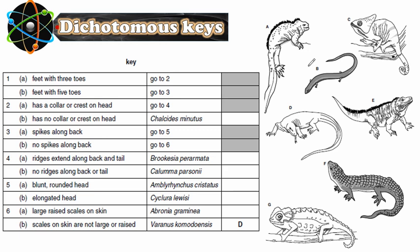We're going to look at this example and how to use a dichotomous key to identify these organisms. Looking at animal A: does it have feet with three toes? No, it has one, two, three, four, five toes — so it does not have feet with three toes. It has feet with five toes.